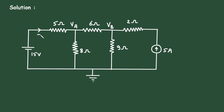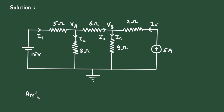Let us assume this is current I1, this is current I2, this is current I3, this is current I4, and this is current I5. All the currents flow towards this reference node. Now, first of all, let us apply KCL at node Va.